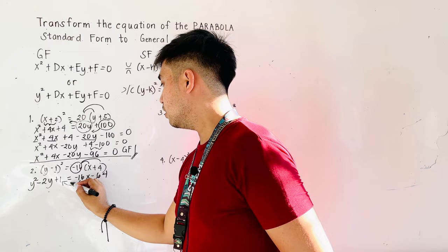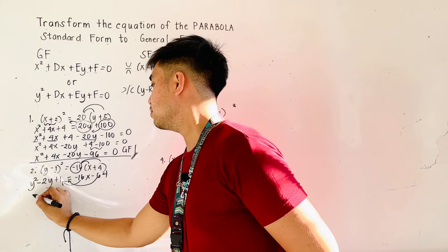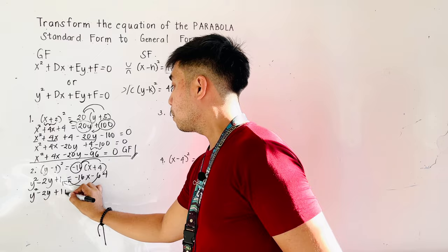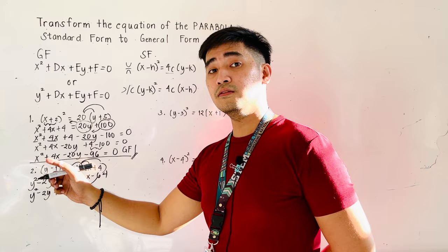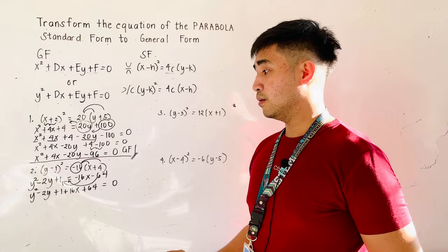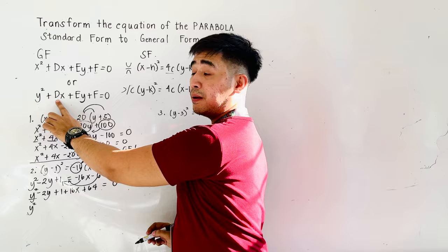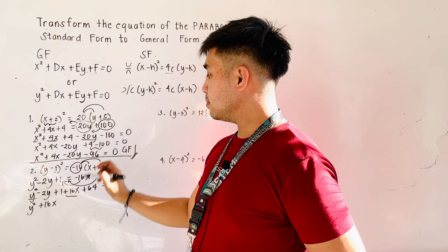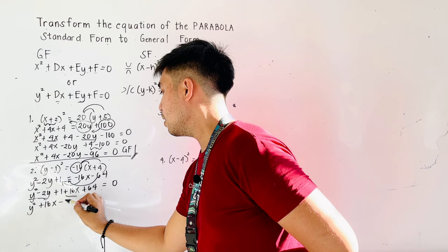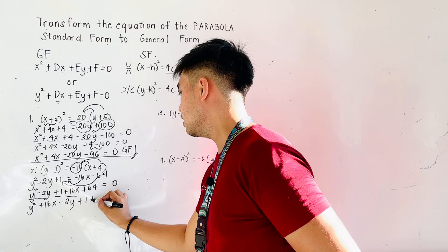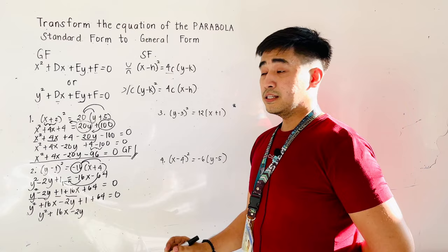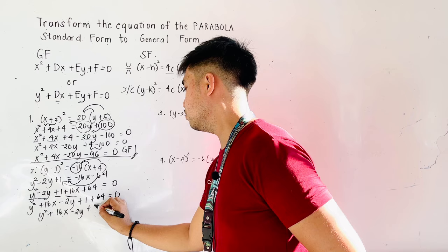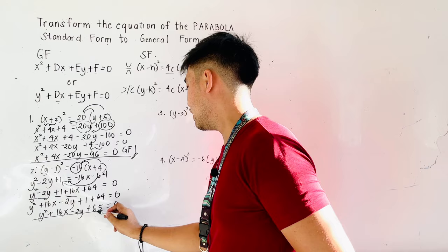Transfer all the values from the right side going to the left side, and we'll be having y squared minus 2y plus 1. Negative 16x transferred to the left side becomes positive 16x. Negative 64 transferred to the left side becomes plus 64, is now equal to 0. Since we have y squared, what comes after y squared? That is plus dx, therefore plus 16x. Then plus ey, therefore that is minus 2y. And all the constants: plus 1 plus 64 is equal to 0. Simplifying, we have y squared plus 16x minus 2y plus 65 is equal to 0. And that is now our general form.